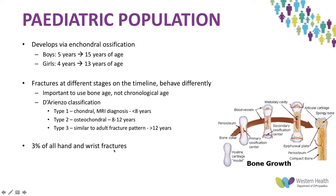In the pediatric population, the scaphoid develops via endochondral ossification, beginning to ossify at about four to five years of age and completing at about 13 to 15 years depending on gender. Fractures at different stages behave differently, so bone age rather than chronological age should be used for assessment and management. The D'Arienzo classification describes Type 1 (purely chondral fracture in children under eight, only visible on MRI), Type 2 (osteochondral fracture), and Type 3 (similar to adult fractures, seen in patients over 12). Only 3% of pediatric hand and wrist fractures involve the scaphoid, compared to 15% of adult wrist injuries.